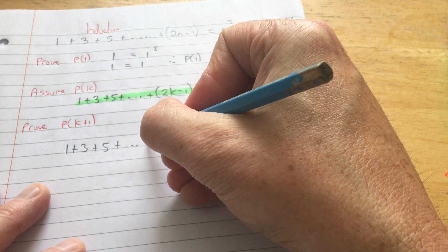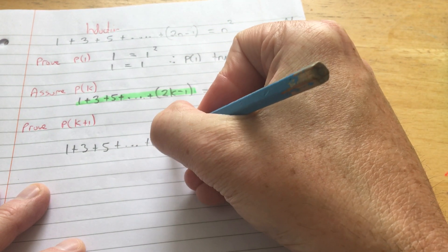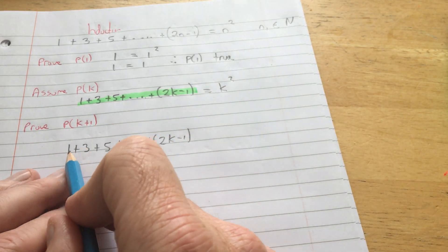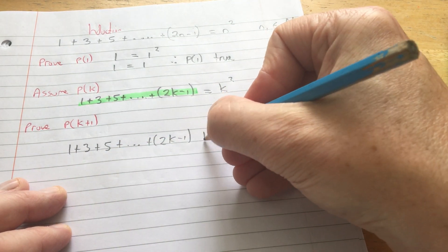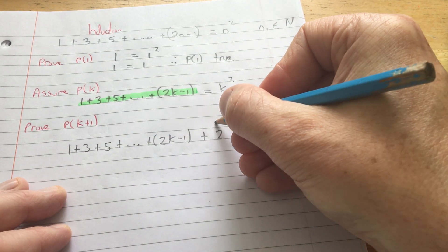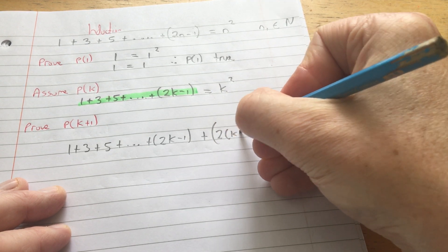So add up the numbers. So plus 2 of k minus 1. So this is, for example, the first 10 odd numbers. And then this will be the 11th odd number.